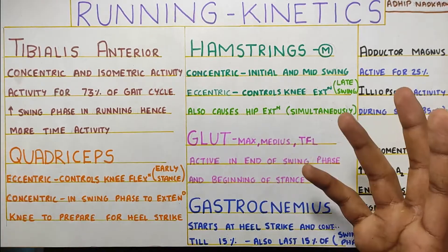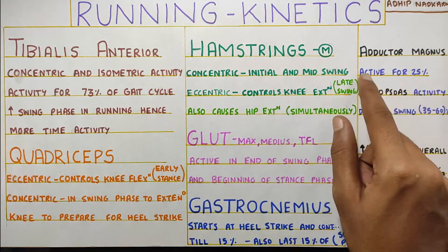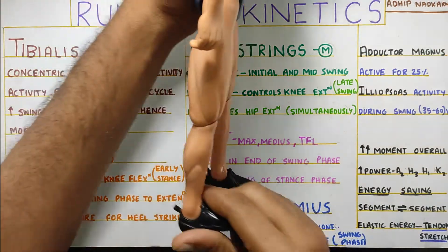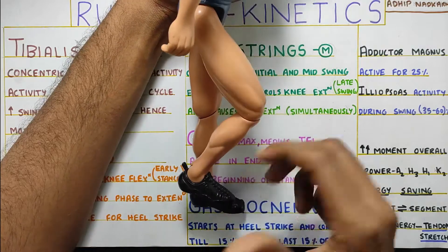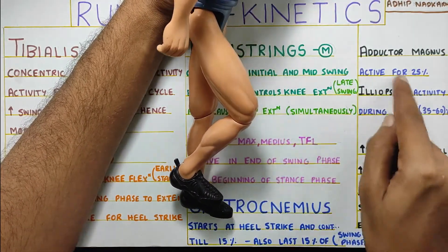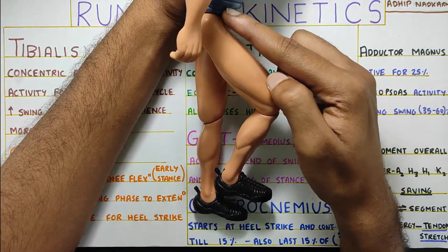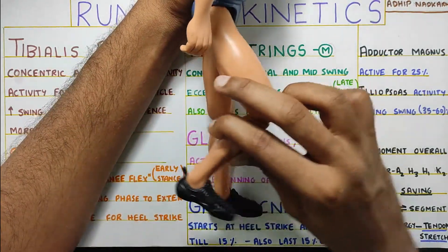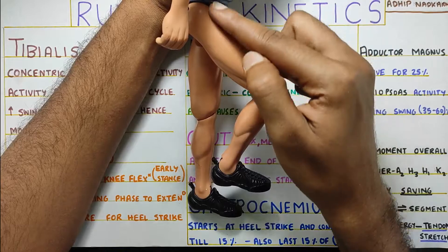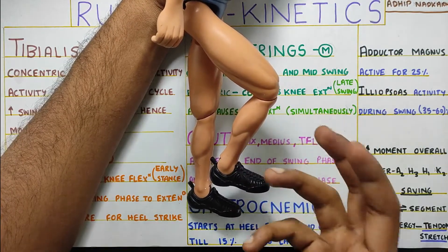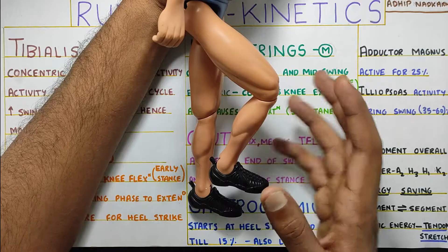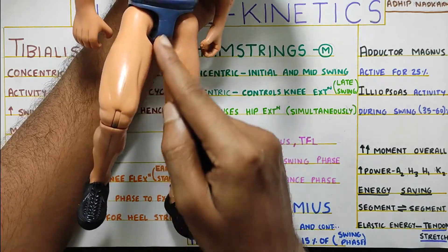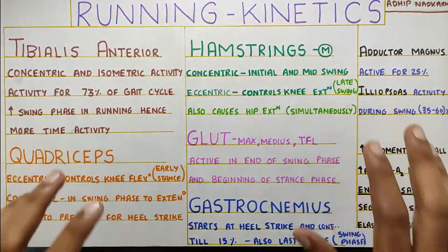There are also a few other muscles. Adductor Magnus, whose activity is seen for about 25% of the gait cycle during the late stance — the end part of the stance — as well as early swing. Also, iliopsoas, which causes hip flexion. It is the deep muscle which causes hip flexion, and its activity will be seen during the swing phase, around 35 to 60% of the gait cycle. Its activity is kind of seen together with your adductor longus, which is present in the inner part of your thigh.